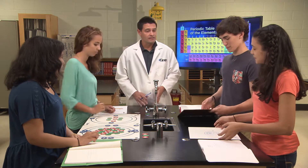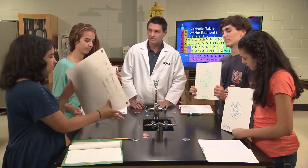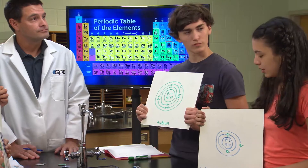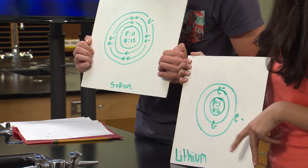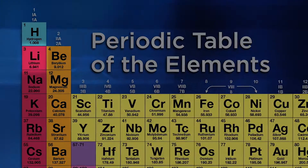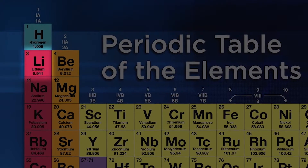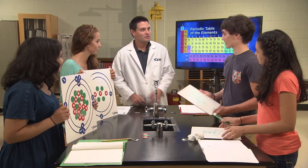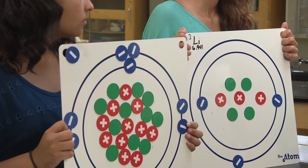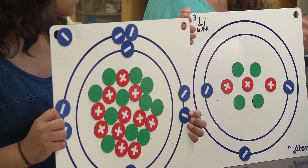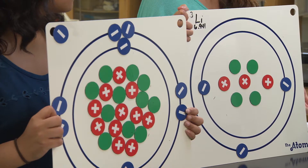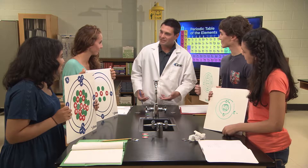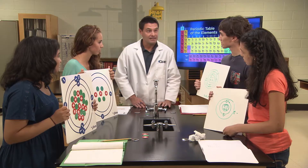Did you finish your Bohr models? Let's have both teams hold up their Bohr models so that we can compare lithium and sodium. What differences do you see? Sodium's got a lot more electrons. Lithium only has two energy levels and sodium has three. Is that why lithium is in period two on the periodic table and sodium's in period three? Yep, good job. What about the nucleus — what's different between the two nuclei? Lithium only has three protons and sodium has 11. And it's important to look at the nucleus because there's a strong attraction between the protons and the electrons, and that attraction is going to affect the atom's properties.